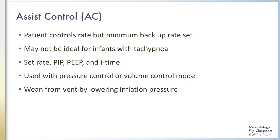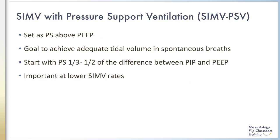PSV is typically used in conjunction with SIMV. PSV implies that the spontaneous breaths above the set rate are supported with additional inspiratory pressure above the PIP. The goal is to achieve adequate tidal volume during spontaneous breaths. Clinicians need to be mindful not to set the pressure of PSV too high — the combined pressure delivered from PSV plus the PIP breath should not be greater than the mandatory PIP breaths. Conversely, pressures set too low may not be enough for infants to overcome the resistance and dead space of the endotracheal tube. PSV breaths are usually set at one-third to one-half the difference between the PIP and PEEP.